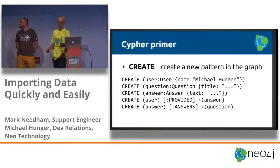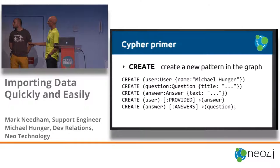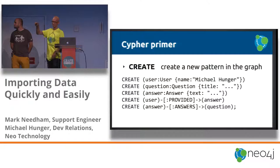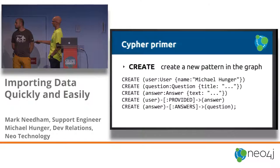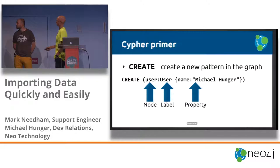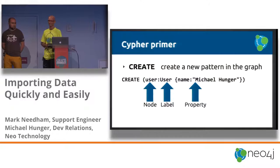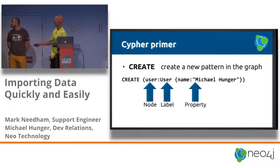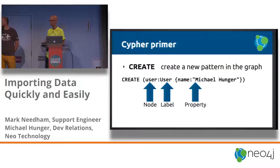For this session, let's start with the CREATE keyword. You're just saying 'I want to create,' and then you tell it a pattern you're looking to create in the graph. We can read it easily: I want a node — the circles represent nodes. Inside my circle, there's a user with a property 'Michael.' We do the same for questions, answers, and so on. This is your glossary: you've got a user as a node — like records in SQL. Then we've got labels, which are ways of grouping nodes. Properties are similar to fields, adding metadata.